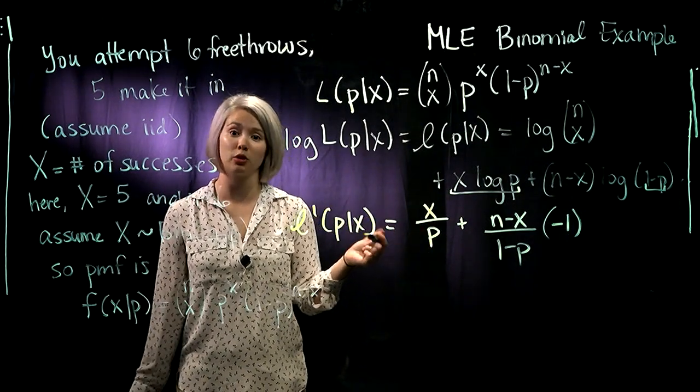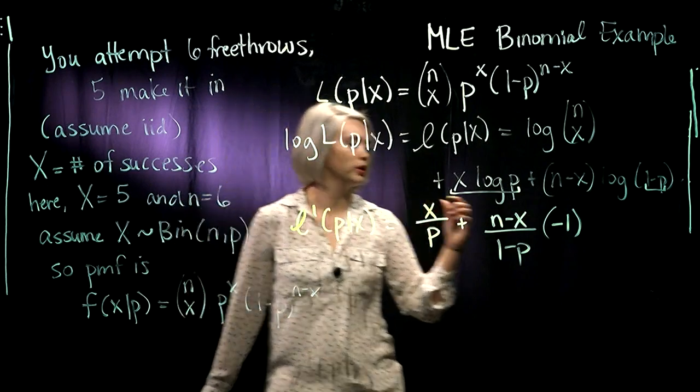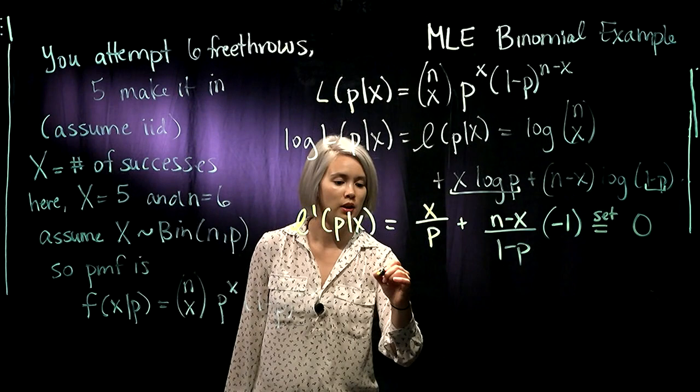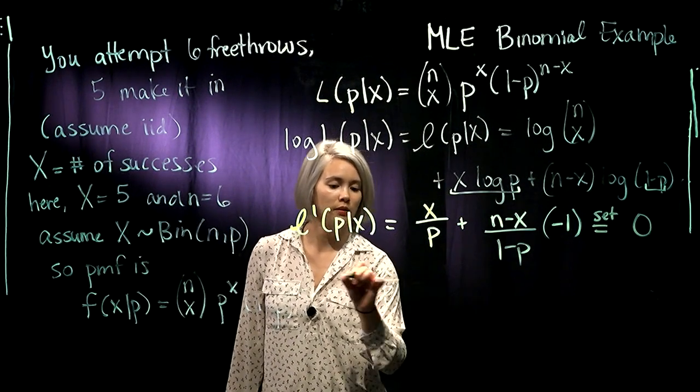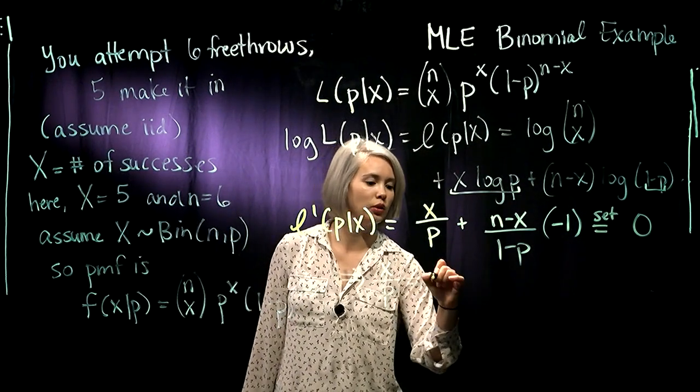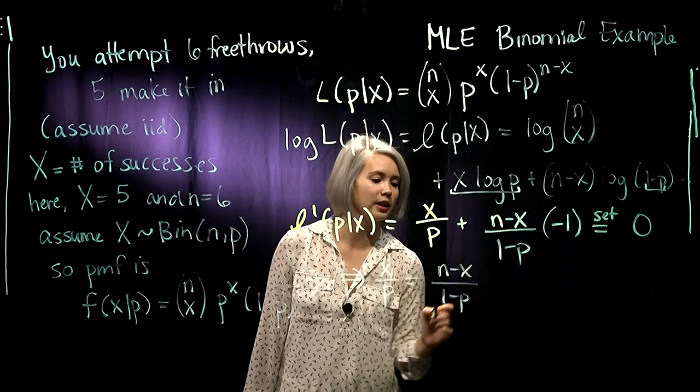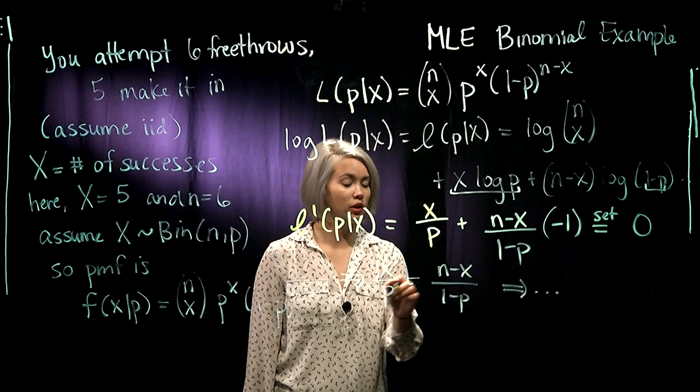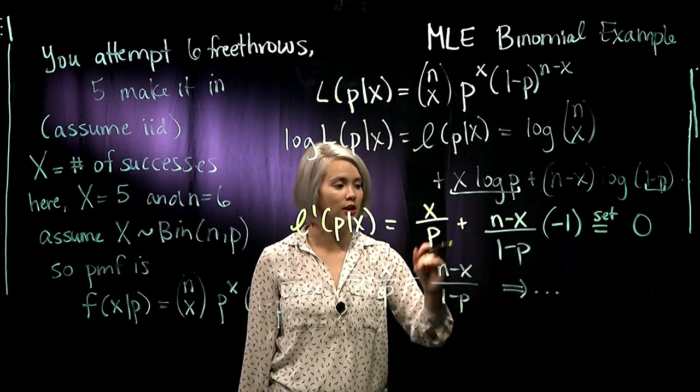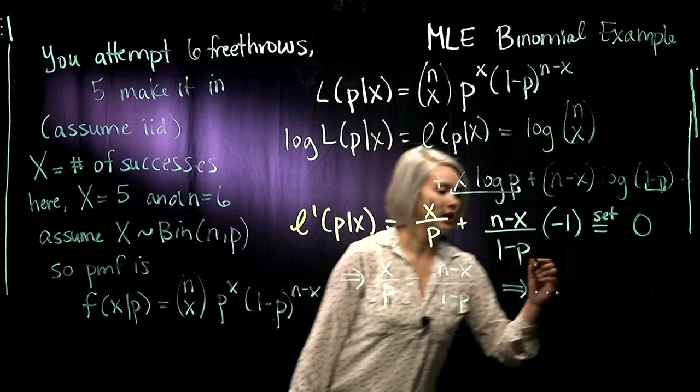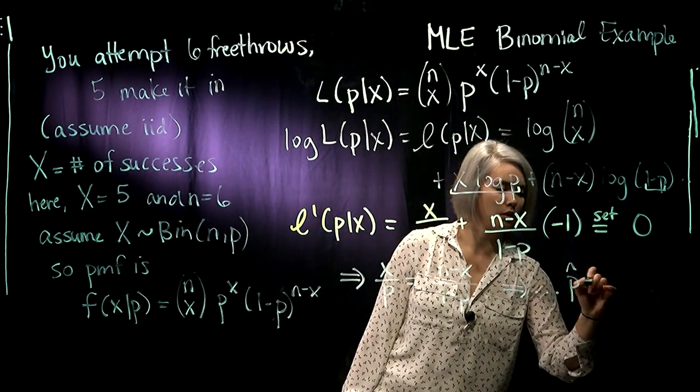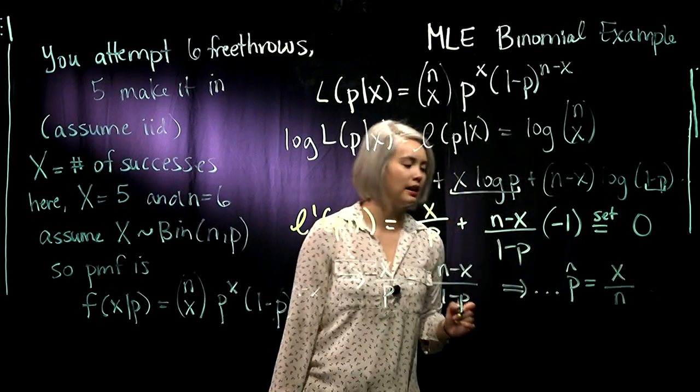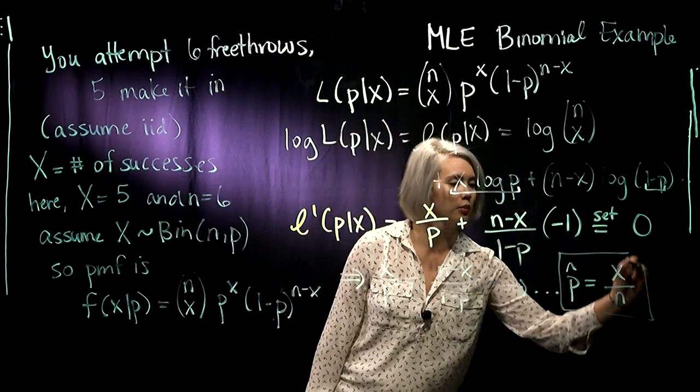We're looking for the maximizer, so we need to set this equal to zero. So we have x over p equals n minus x over 1 minus p. Now we need to solve for p, do our cross multiplication and solve for p, and we get p hat equals x over n when we finally solve for p.